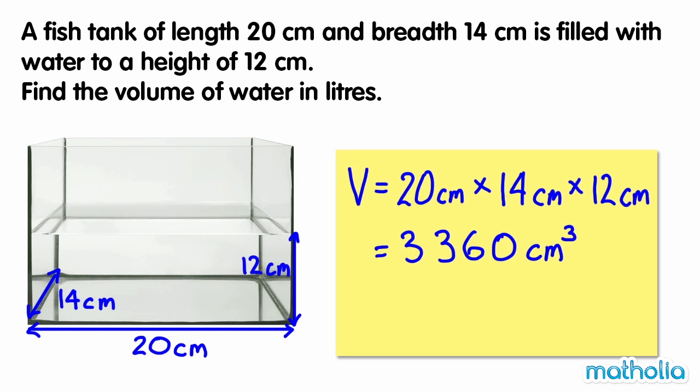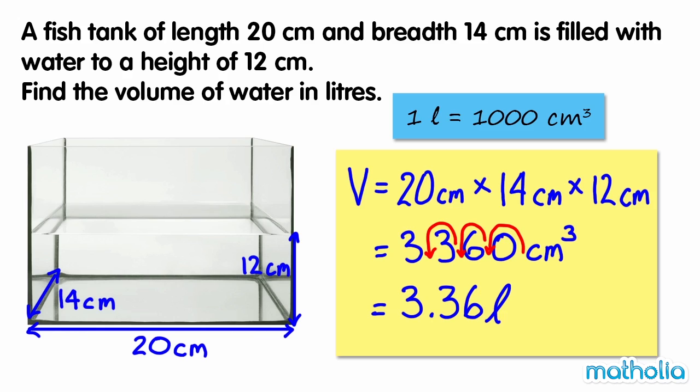So the volume of water in the tank is 3360 cubic centimeters. One liter equals 1000 cubic centimeters. So to express the volume in liters, we need to divide by 1000. The volume of water in the tank is 3.36 liters.